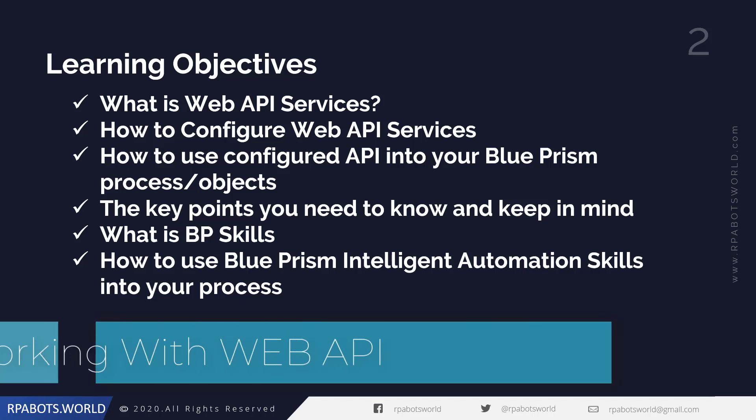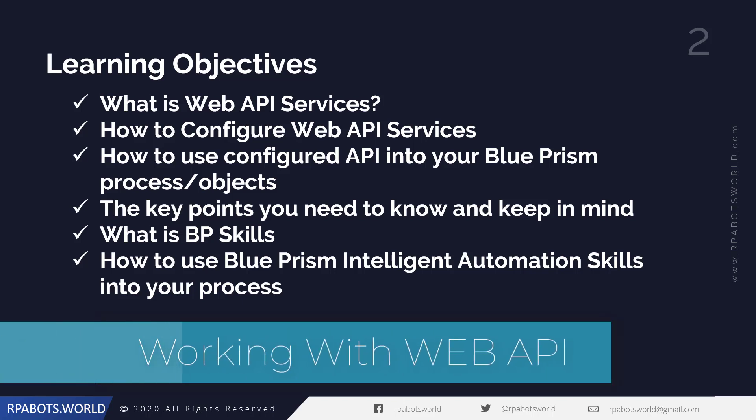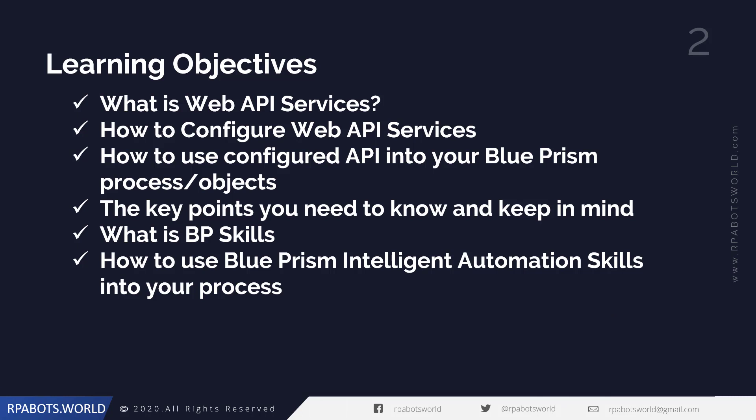Hi everyone. The learning objective for this section is: what are web API services? How are we going to configure web API services in the Blue Prism tool? How can we configure APIs in our Blue Prism processes and objects? We'll also talk about what are the key points you need to keep in mind when configuring web APIs into your process.